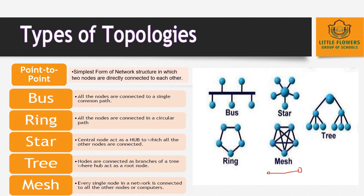Next is tree topology. Nodes are connected as branches of a tree where hubs act as a root node. In tree topology, one star network is connected to another star network. If a cable fails in one of the star networks, it will isolate only the workstations linked to the central computer of that particular network. The topology has branches like tree branches.